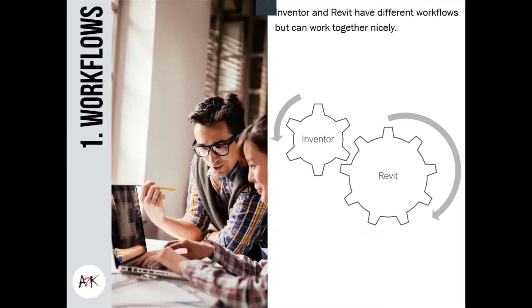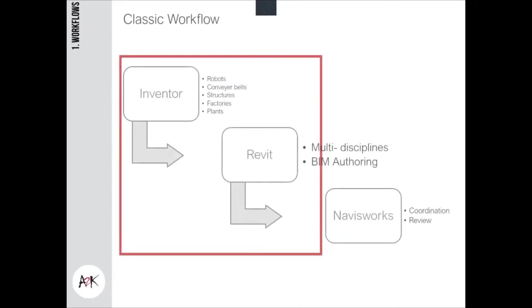Some classical workflows include designing fabrication streets, warehouses, or whole plants in Revit, where factory designs and robots or conveyors — traditionally coming from Inventor — flow together for multi-discipline BIM authoring. You might then transfer files to Navisworks. So a common waterfall workflow could go from Inventor to Revit to Navisworks.